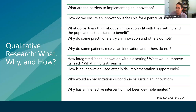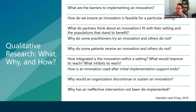Qualitative research helps with the what, why, and how of implementation science. Examples of questions it can help answer include: how do we ensure an innovation is feasible for a particular setting? Why do some practitioners try an innovation and others do not? How integrated is an intervention into the setting? Why would an organization discontinue or sustain an innovation? And why has something not been de-implemented when shown to not be effective?